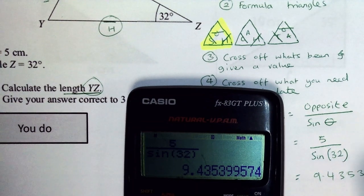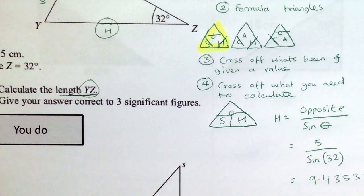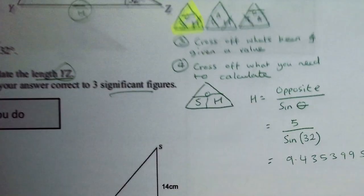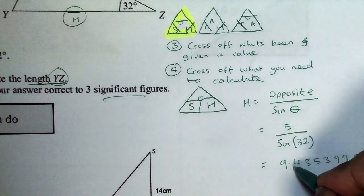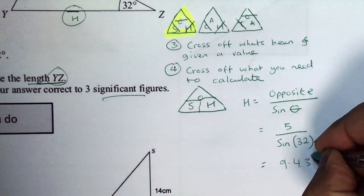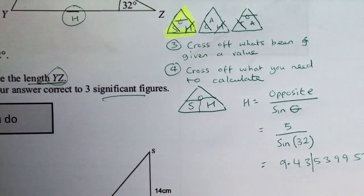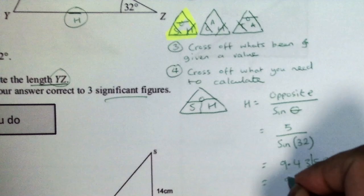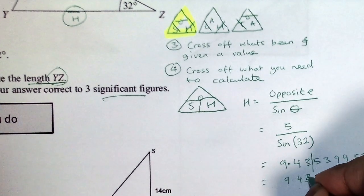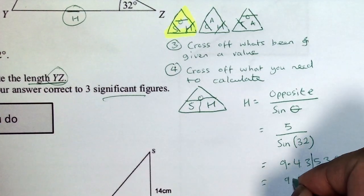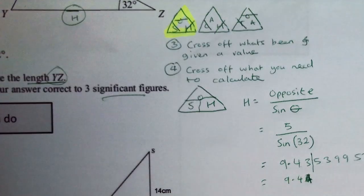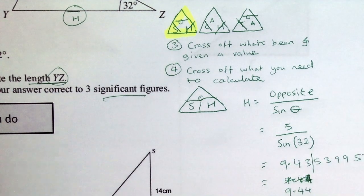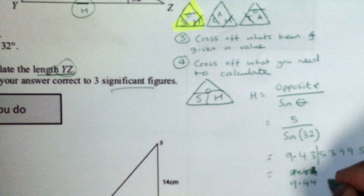9.435399574. Now it's asking me to give my answer to 3 significant figures. So significant figures I count from the beginning: 1, 2, and 3, unless it started with a zero. Now that becomes 9.44 because it will round up, because the number after the line is 5. 9.44 centimeters.